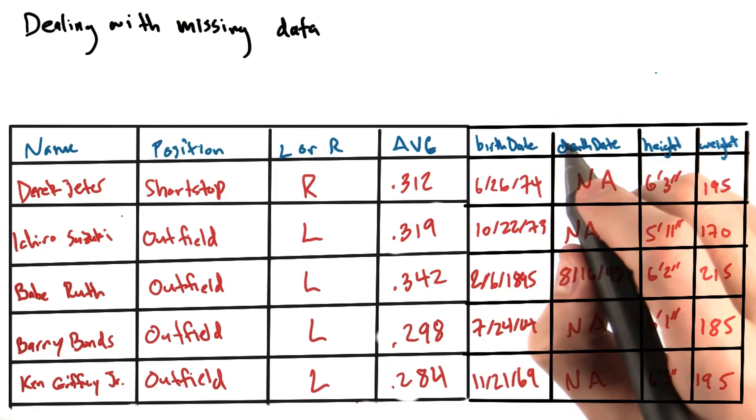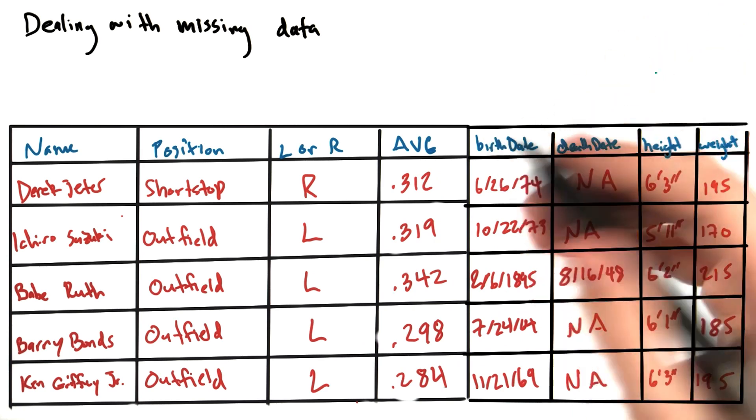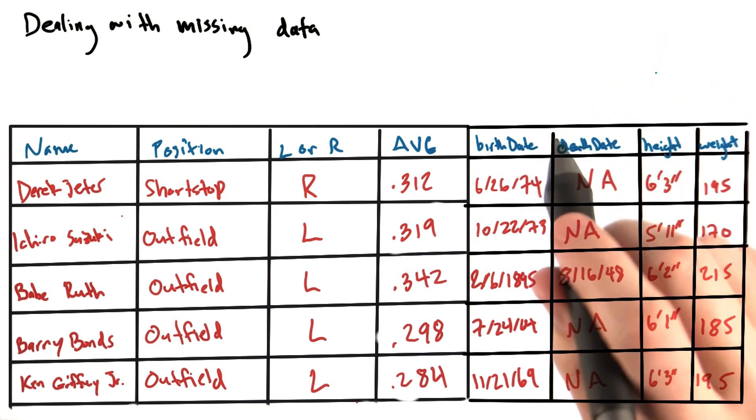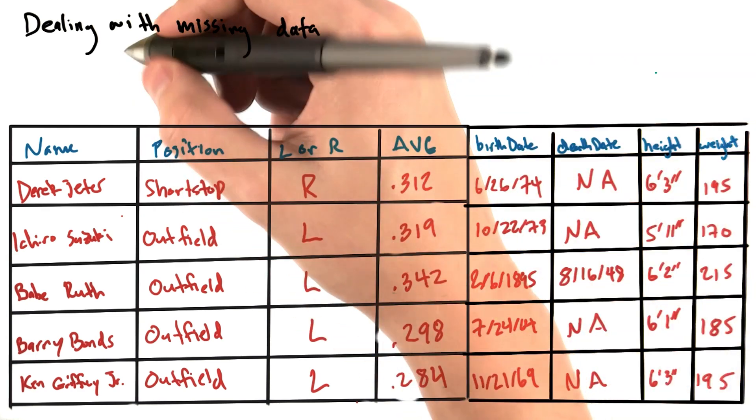Let's say there are missing values in your data distributed at random. What do we do? There are two approaches I want to discuss here: partial deletion and imputation.